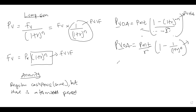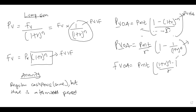We also have the future value of ordinary annuity, which is: Payment × [(1 + r)^n − 1] / r. This factor is called the future value interest factor of annuity.